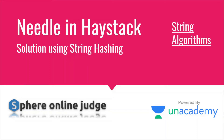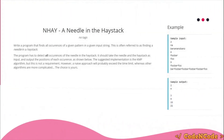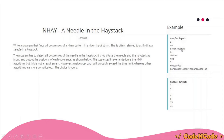Hello guys, this is Code Encode and this is a video editorial for the problem 'Needle in a Haystack' taken from SPOJ. We'll be solving this problem using string hashing that we have learned in the past one or two lectures in the String Theory Algorithm series. The problem is simple: you are given a pattern and a text, and you have to search at what indices the pattern exists in the text. For example, 'na' exists at index two and four in the text.